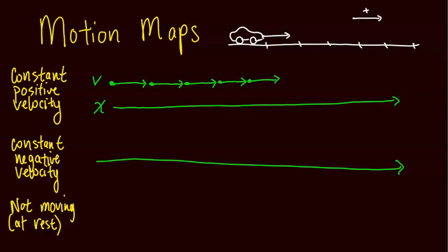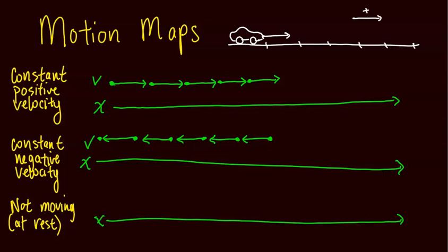For constant negative velocity — moving towards the left — the dots are again equally spaced, but the arrows point towards the left. If the object is not moving, you would just have dots stacked at the same location with no arrows, because it stays in the same place. In physics you should be able to represent motion using both motion maps and motion graphs.